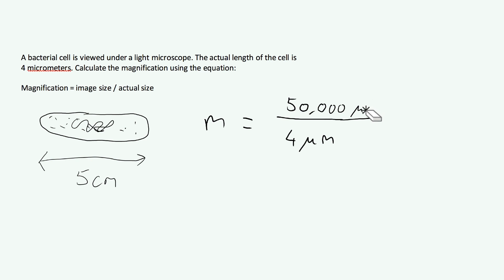And then boom, now your units are the same. Micrometers, micrometers. And so we just carry out this calculation. 50,000 divided by 4, you could do that in your head or in a calculator, that is going to be 12,500. And there are no units. Magnification has no units, hence why these units must be the same. Because when you divide, they cancel out.